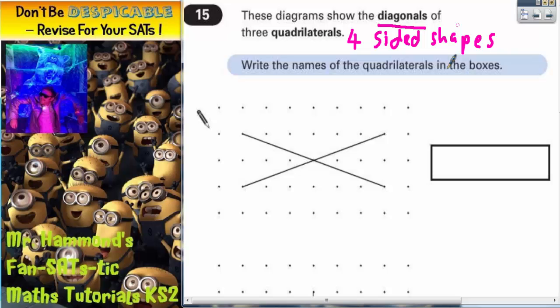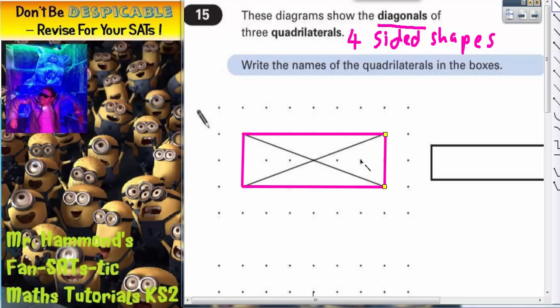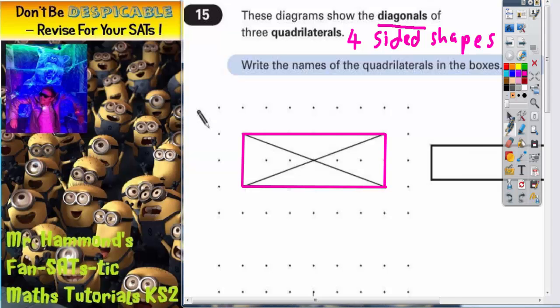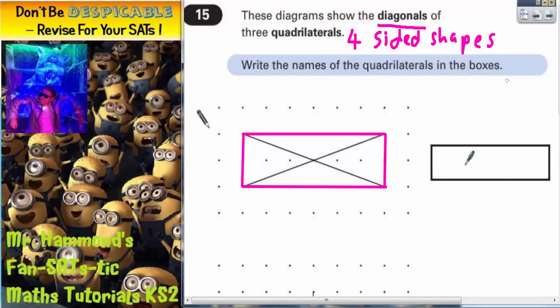So if we do that for the rectangle we get this, and you can quite clearly see that what we have here in this first one is a rectangle. So that's what we need to write in the first answer space: rectangle.